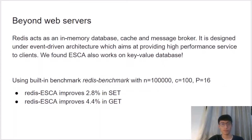Beyond web servers, we also explored another type of event-driven application. Redis acts as an in-memory database, cache, and message broker, designed under an event-driven architecture to provide high-performance service to clients. We found ISCA also works on key-value databases. Using the built-in benchmark with 100 connections, a pipeline number of 16, and 100,000 total requests, ISCA improved performance by 2.8% and 4.4% for set and get operations respectively.